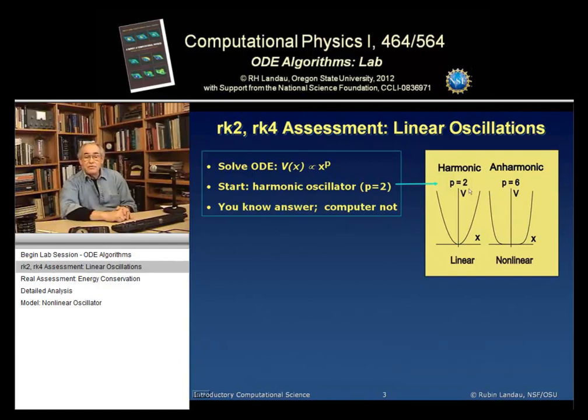We'll start with the harmonic oscillator, p equals 2. And the reason is, we know the analytic, we know the exact answer. The computer, however, doesn't know the exact answer. So, if we develop a computer method, and you learn how to use the computer tools well enough so that you can reproduce the analytic answer very well, and the computer never knew what the analytic answer was, then for other values of p than 2 for which there are no analytic solutions, we can be confident in the computer solution.